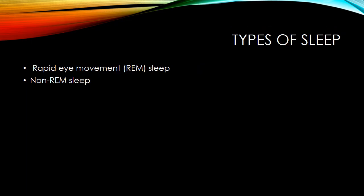There are technically two types of sleep. The first is Rapid Eye Movement sleep, known as REM sleep. It is a kind of sleep that occurs at intervals during the night and is characterized by rapid eye movements, more dreaming, bodily movements, and faster pulse and breathing.